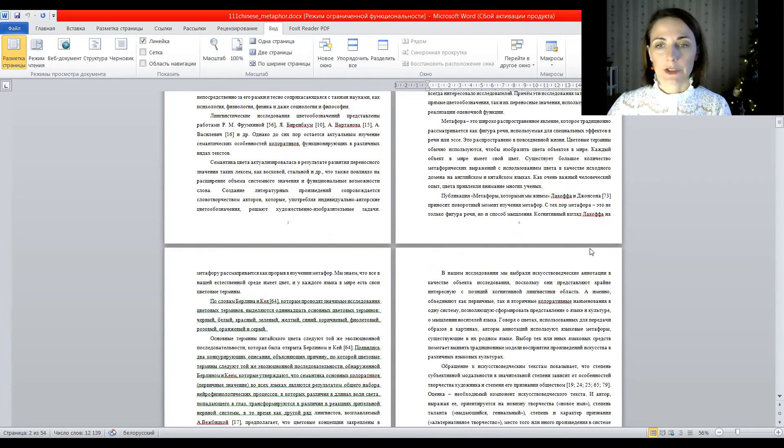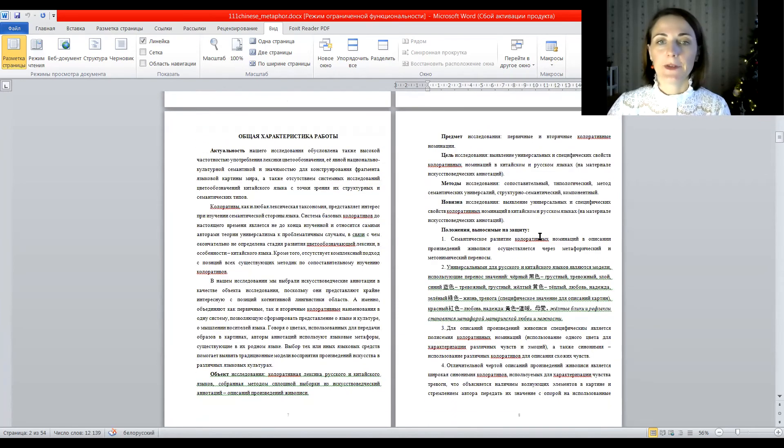So introduction, all my words, keywords explained. Then general characteristic of your work, of your paper. So there you write actuality, so novelty of your work, why it is important, what's the current issue in science, then the aim of your research methods.